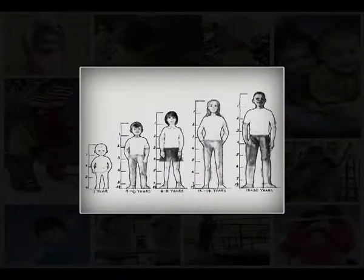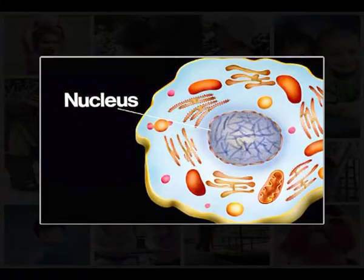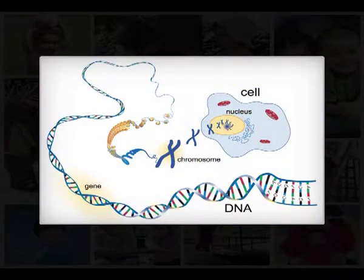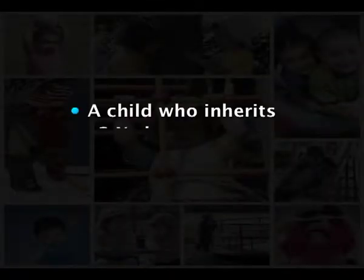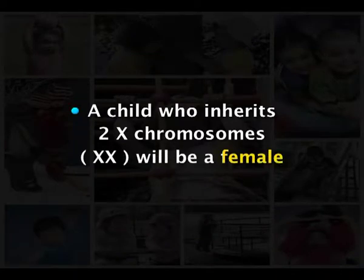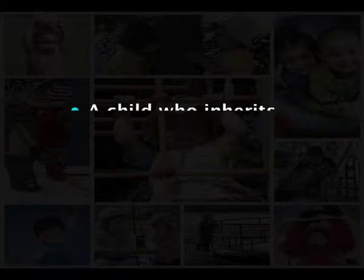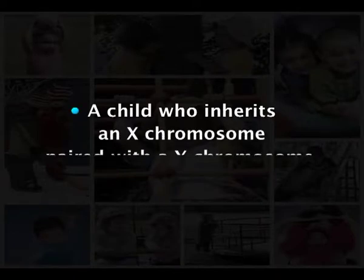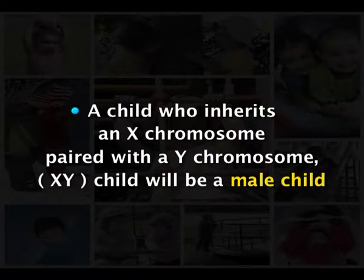Heredity exerts considerable influence over body size, shape, height, intelligence, athletic potential, personality traits and a host of other details. The nucleus of every cell of the human body consists of 46 chromosomes, which are small thread-like structures. The chromosomes transmit coded instructions of hereditary behavior. We receive one half of our chromosomes and genes from each parent. A child who inherits two X chromosomes — that is XX — will be female. A child who inherits an X and Y chromosome — that is XY — will be male.